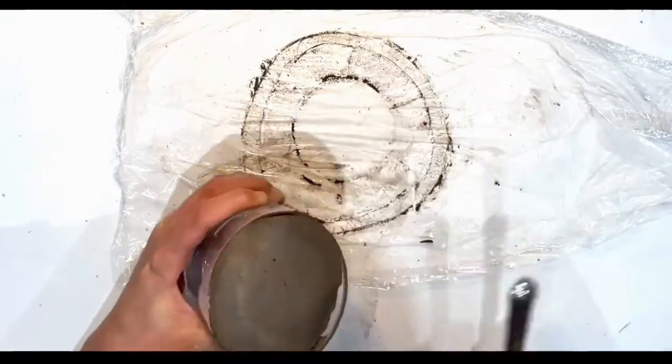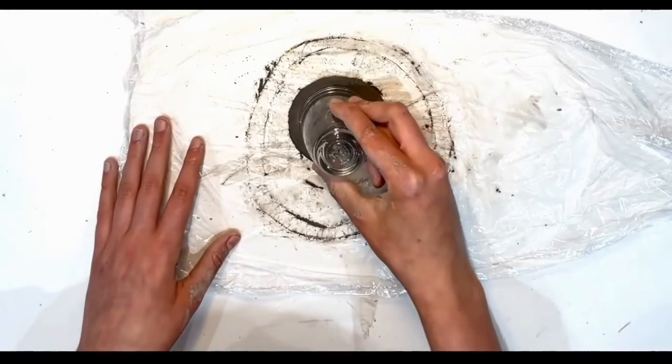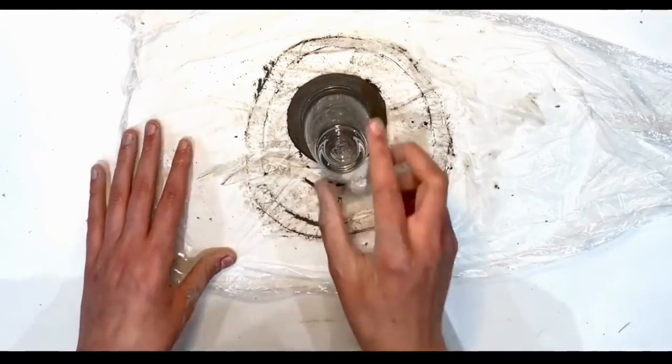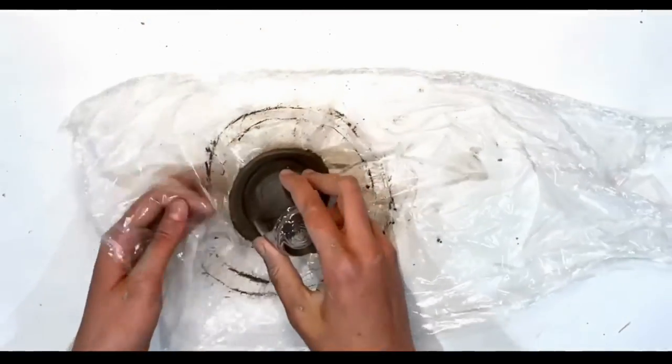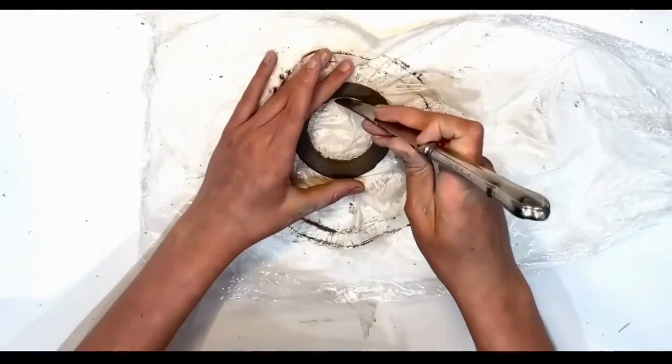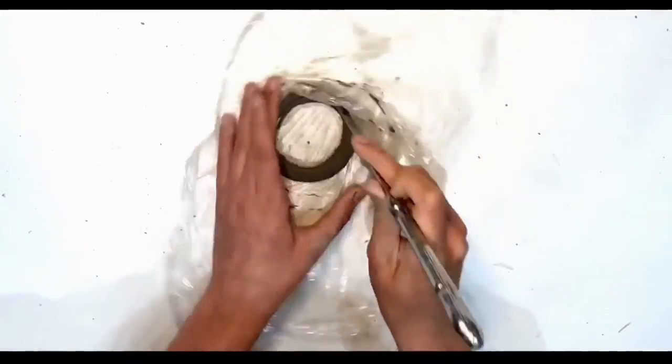Take the clay that was inside the second largest cup, and with the smallest cup that you have, cut out the center. Make this circle narrower and neaten up the edges.